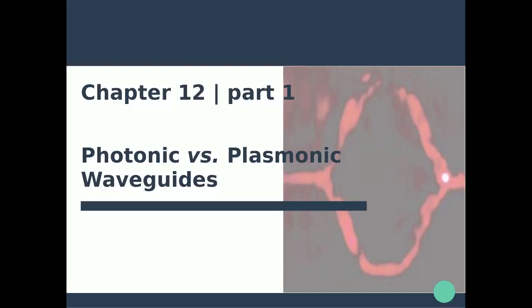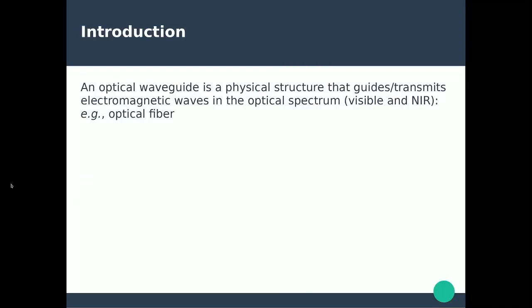Hello everyone and welcome back to this nanophotonics and plasmonics course. In this video we're going to discuss and compare photonic and plasmonic waveguides, but first let's define what an optical waveguide is. An optical waveguide is simply a physical structure that guides and transmits electromagnetic waves, typically operating in the optical portion of the electromagnetic spectrum — so typically in the visible and near infrared.